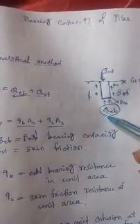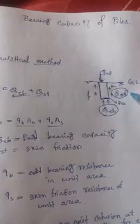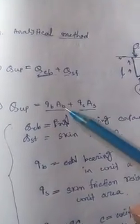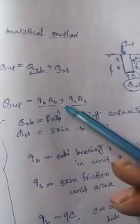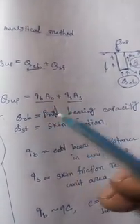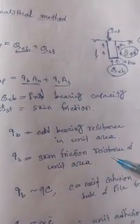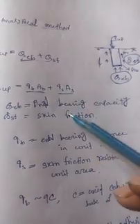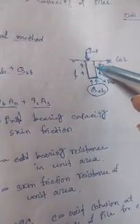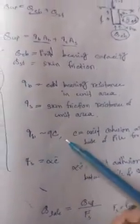The ultimate bearing capacity of the pile will be end bearing plus skin friction. Another formula is: QUP equals to QB into AB plus QS into AS, where QB is the end bearing resistance per unit area, AB is the bearing area, QS is the skin friction resistance per unit area, and AS is the total surface area of the pile.